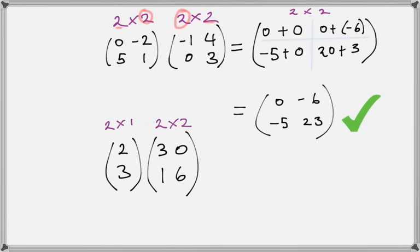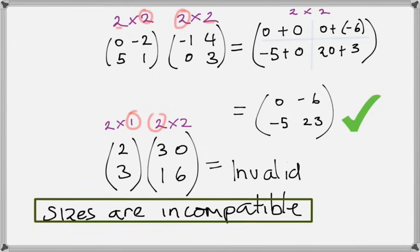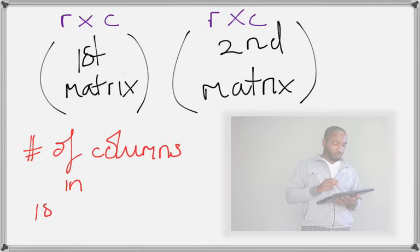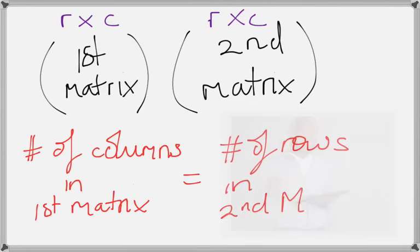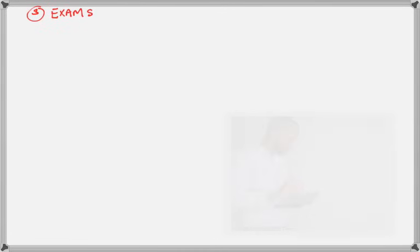Let's try our next style: a two by one multiplied by a two by two. We have a problem here. The two numbers in the center — these two must be the same for multiplication to be possible. They are not the same, so it's invalid. Sizes are incompatible; you can't multiply them. So once again: the number of columns in the first matrix must equal the number of rows in the second matrix for matrix multiplication. Mark that down.